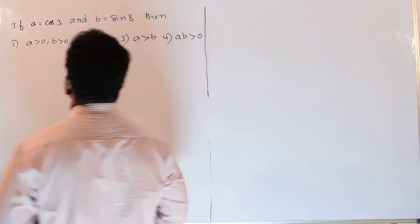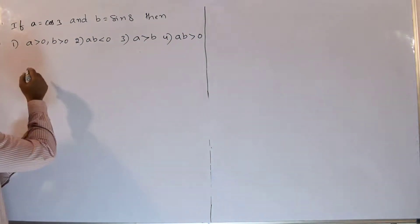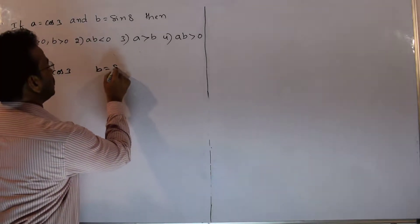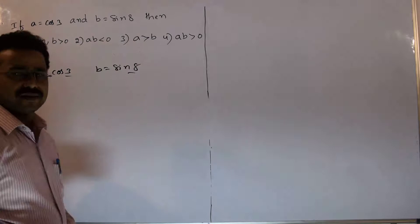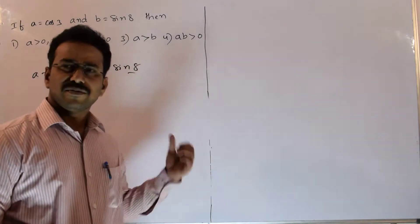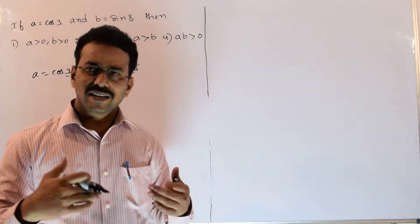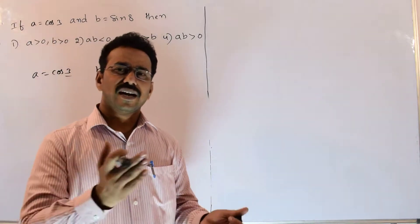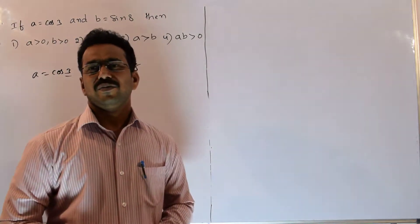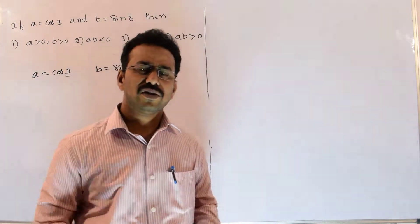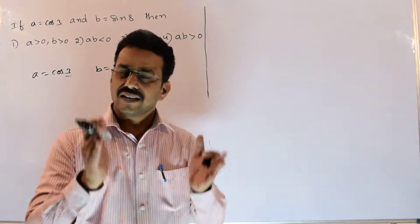First let me read the given trigonometric ratios: A equals to cos 3, B equals to sin 8. Now 3 and 8 are radians, they provide the information in terms of radians not degrees. But first we will try to convert into degrees and then decide sin belongs to which quadrant and cos belongs to which quadrant so that we can decide the signs.